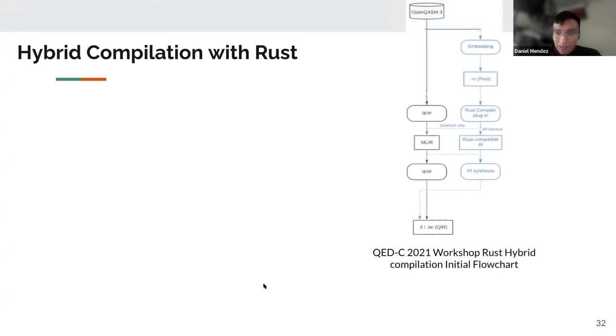So right here on the right graph, this is a QEDC 2021 workshop Rust hybrid compilation initial flowchart. So you can see OpenQASM 3, which would be embedded in Rust. So this is kind of surprising because you have a quantum assembly language embedded in the classical language, right? That classical language is Rust. So already this is a bit strange territory. But now that we're at Rust, we want to somehow separately lower that OpenQASM code separately from the Rust classical code. So here you see, once you're at the Rust compiler plugin, you move to the left, and that's where you separately lower the quantum code. And then you use QCore to produce the QIR. And then starting back at the Rust compiler plugin, you want to also lower the classical code. And here you go through this flowchart, and you would get the QIR.